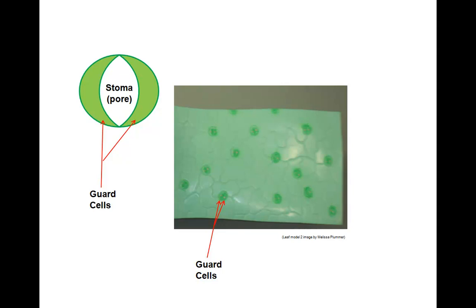Here is another view on the top of the leaf. Here you see the guard cells and a schematic drawing of the guard cells surrounding the pore, the stoma.